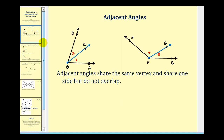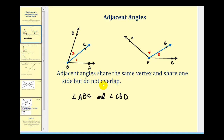Let's first talk about adjacent angles. Adjacent angles share the same vertex and share one side but do not overlap. So looking at this diagram here, angle one and angle two are adjacent angles. We can identify angle one as angle ABC, and we can identify angle two as angle CBD. These two angles are adjacent angles.